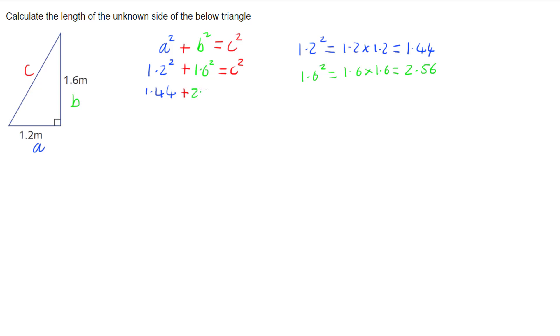So we're going to have 1.44 plus 2.56, and that is the same as C squared. Now we can add those two together. 1.44 plus 2.56 is simply 4, is C squared.